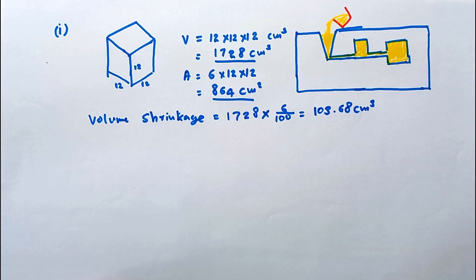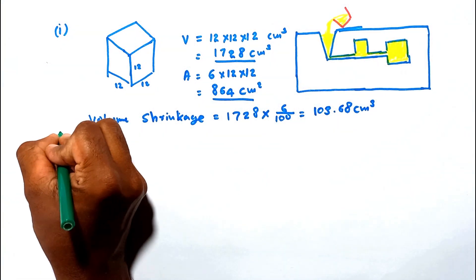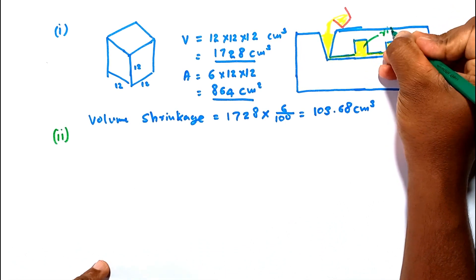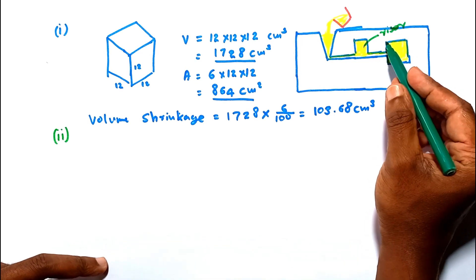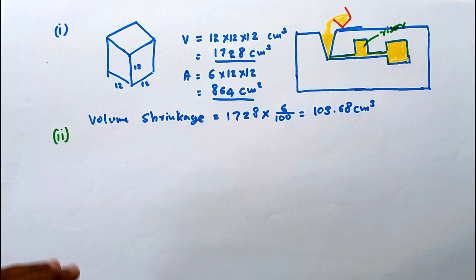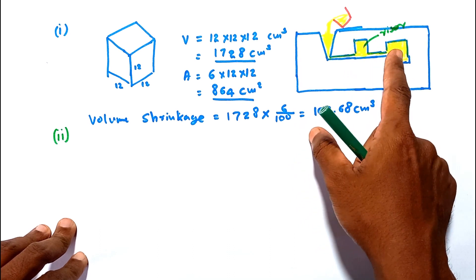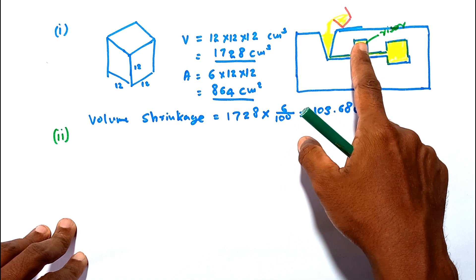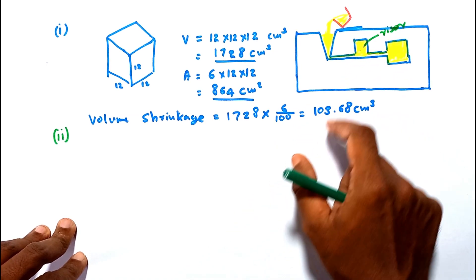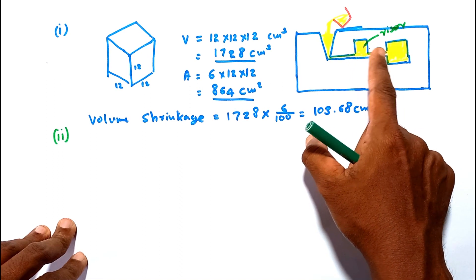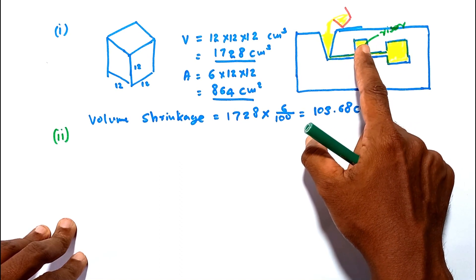Moving to Part 2, we need the minimum size of the riser to provide the shrinkage volume. In riser design, there are three considerations: first, the riser should be able to feed enough volume to compensate for the shrinkage in the casting; second, the riser should keep molten metal until the part is completely solidified; third, the riser should be placed closer to the casting to avoid solidification of the runner from riser to casting.